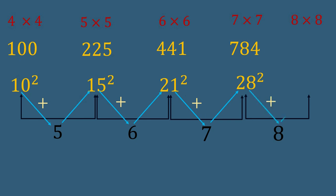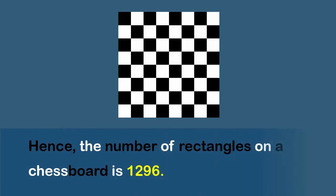Finally, 28 plus 8 results in 36, and the number of rectangles in 8 by 8 layout is 1296. Hence the number of rectangles on a chessboard is 1296.